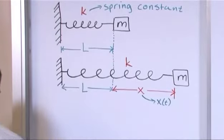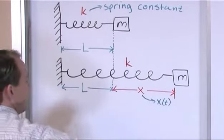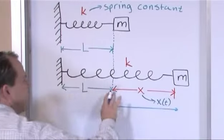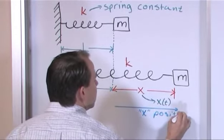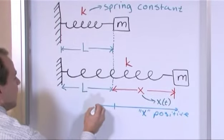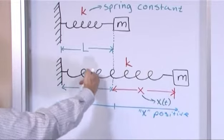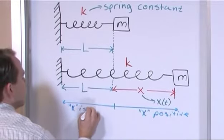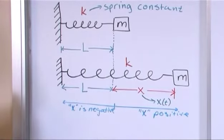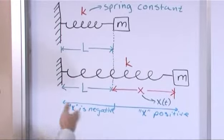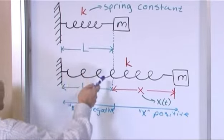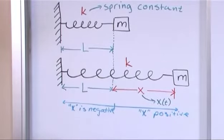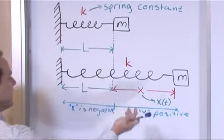X is positive on one side of the equilibrium position and negative when the mass overshoots and compresses the spring. We know X(T) will oscillate: positive, negative, positive, negative. Eventually it will stop because friction will slow it down. If it were a perfect spring with no losses in space with no friction, it would oscillate forever — but of course that never happens.